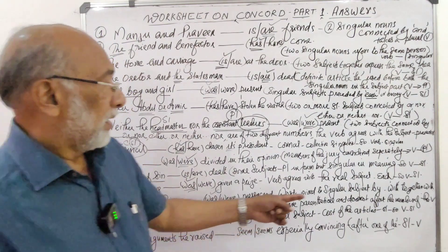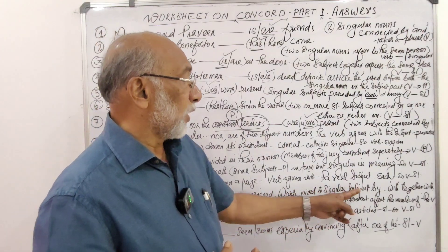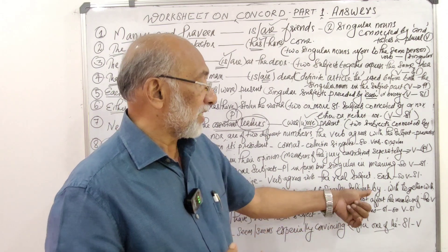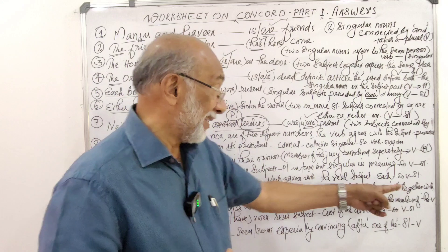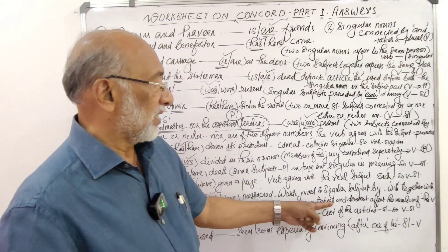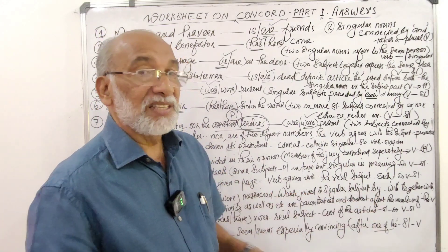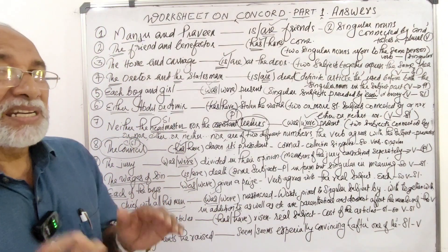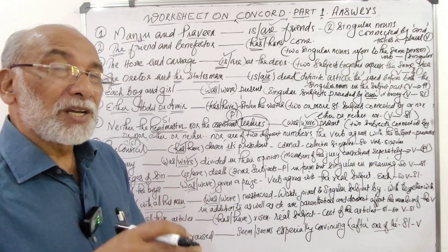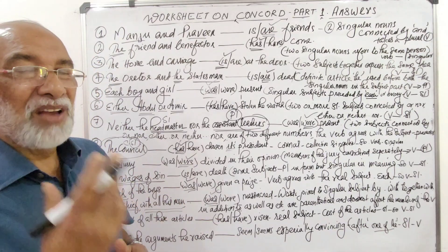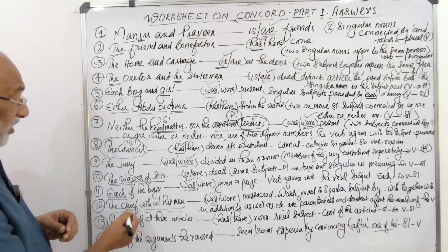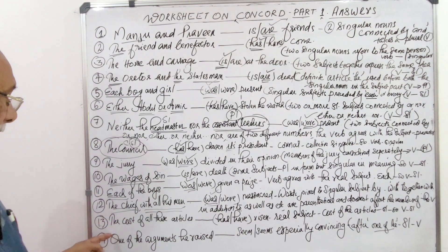A general rule: words joined to a singular subject by 'with,' 'together with,' 'in addition to,' 'as well as,' etc. are parenthetical and do not affect the number of the verb. You do not consider the parenthetic expression when determining the verb — you consider only the real subject, which in this case is 'the chief.'